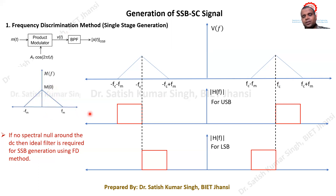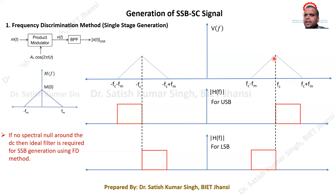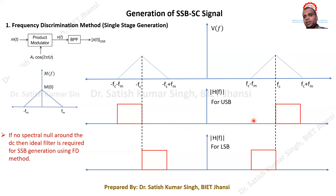Whenever there is no spectral null around the DC, ideal filtering is required. We want to pass one sideband completely and completely remove the other. Since there is no gap between the sidebands, an ideal filter is the only solution — we cannot use practical filters. We cannot design ideal filters, so this is one practical implication when generating the SSB-SC signal using the frequency discrimination method.